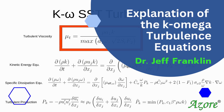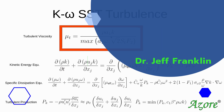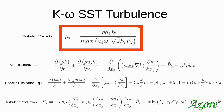Let's look at the K-omega SST turbulence model. If we look at the turbulent viscosity, we have the turbulent kinetic energy. But looking at the denominator, it has a limiter in it. This max term says to pick the largest of these two values, and we're going to talk more about what each one of these terms mean.